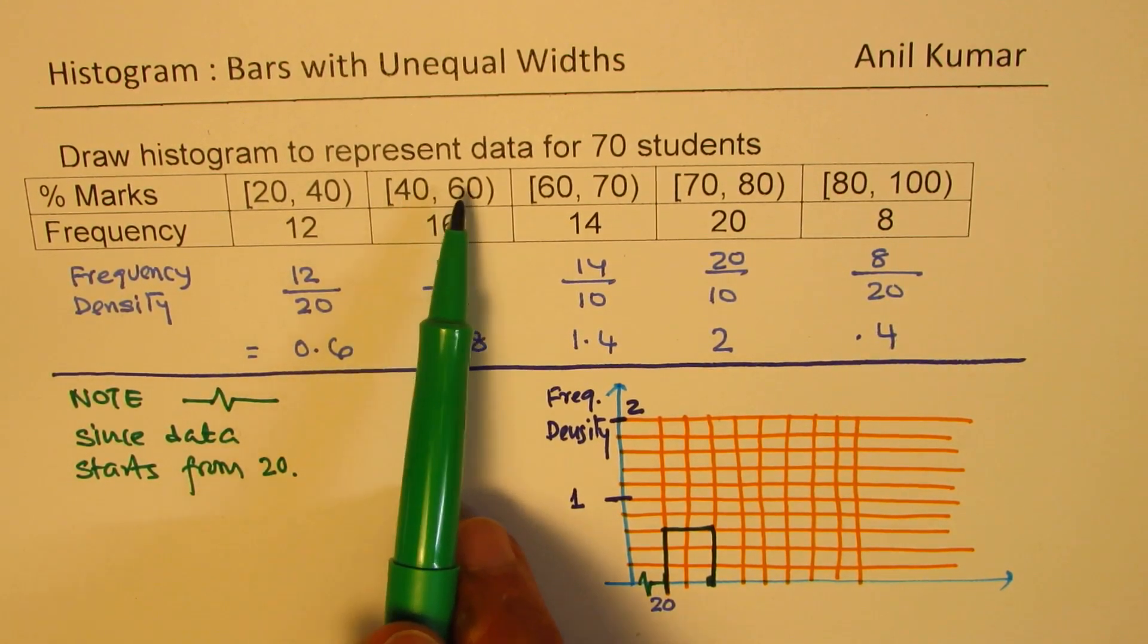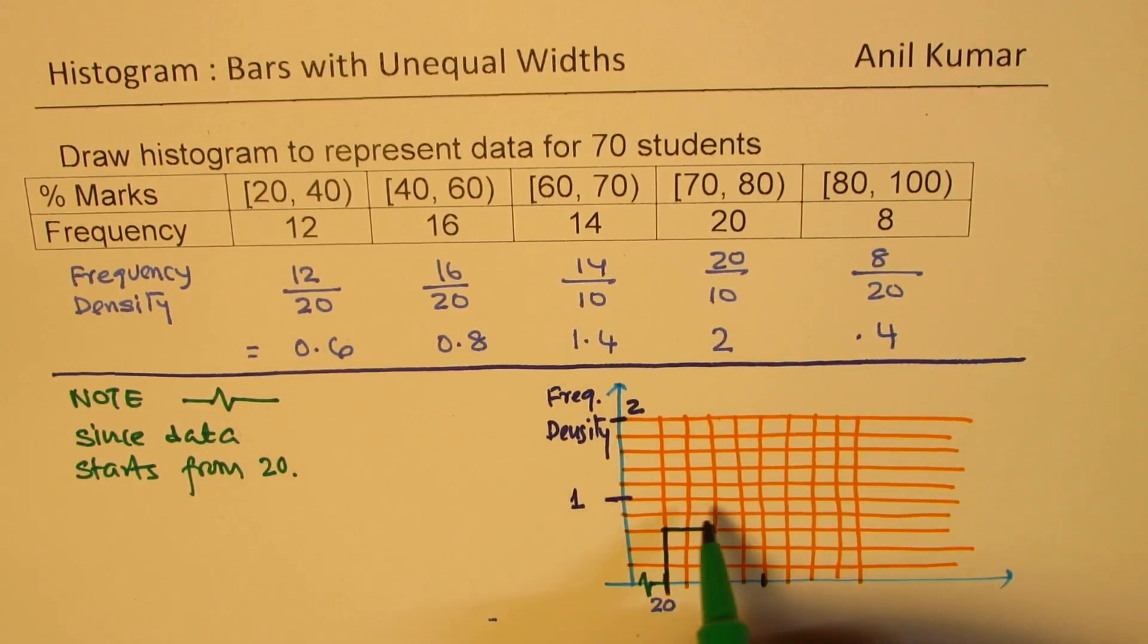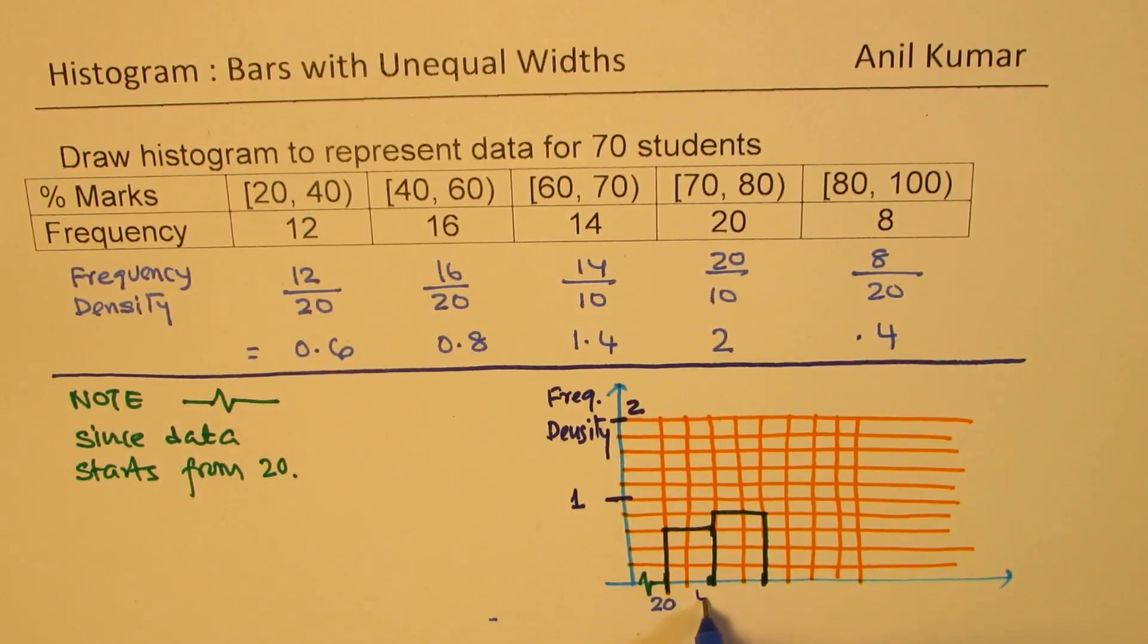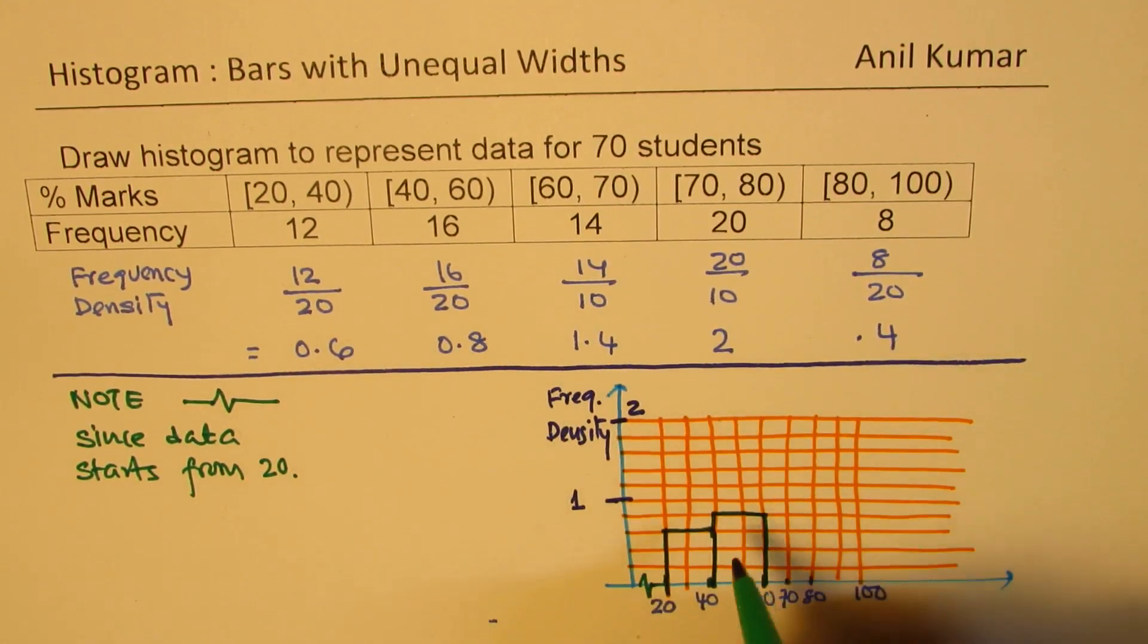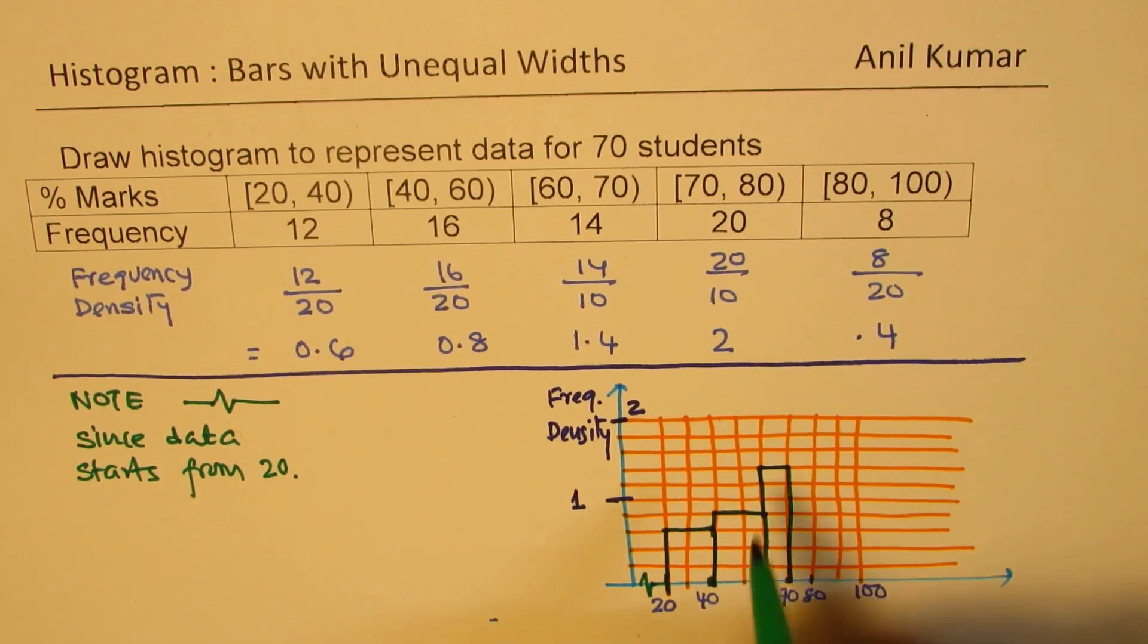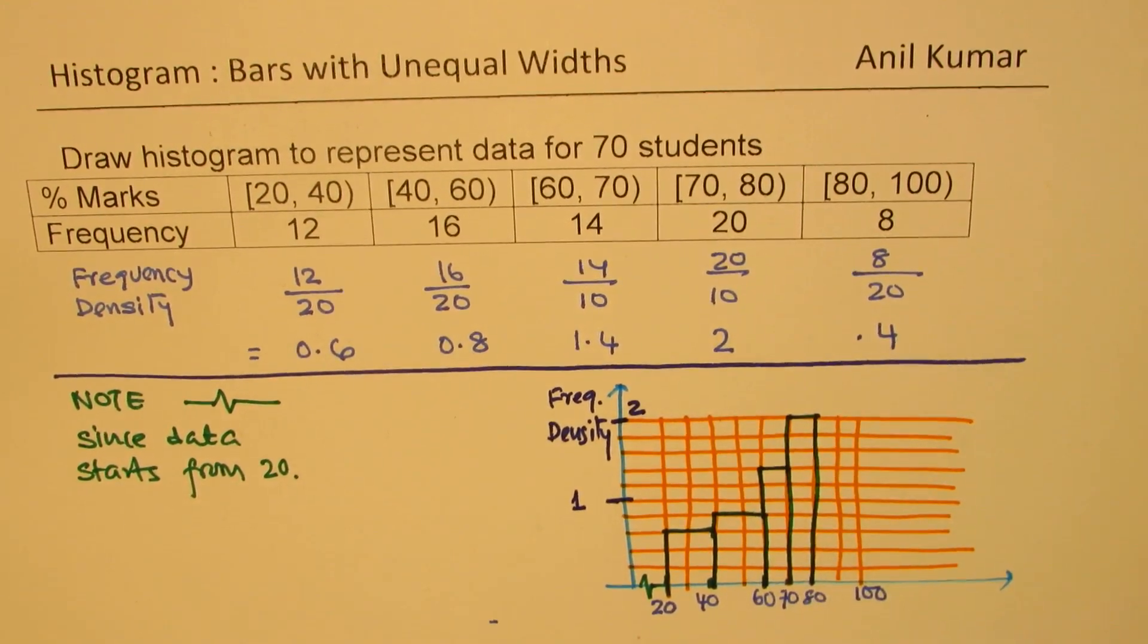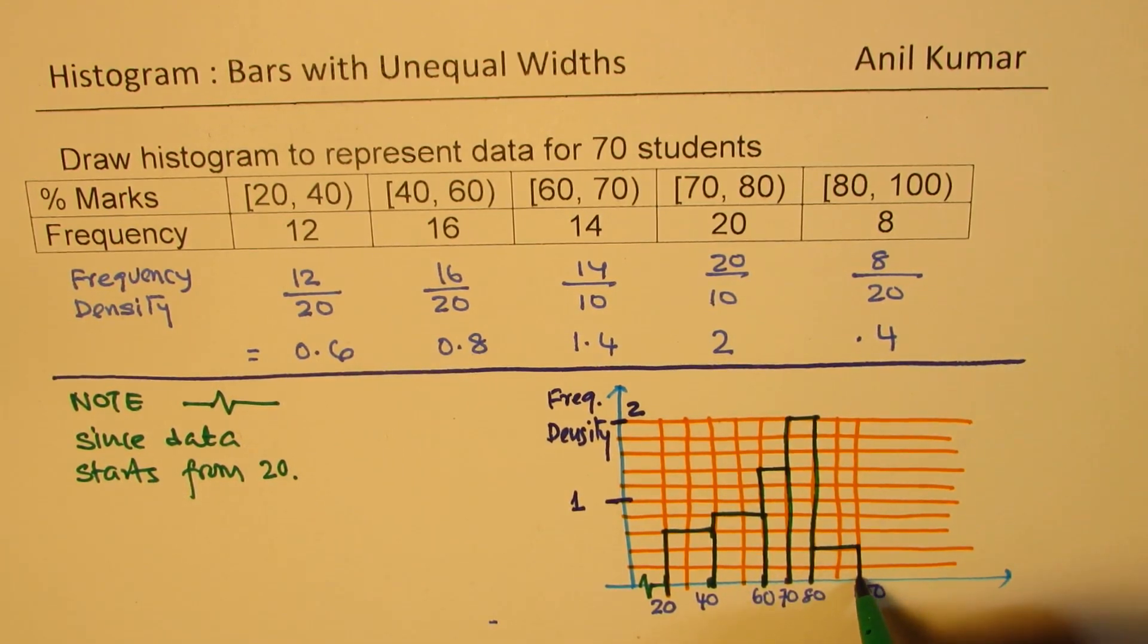Then 40 to 60 with density 0.8, we'll go up to that point. From 60 to 70, the density is 1.4. From 70 to 80, density is 2, so we'll go up to the top. Then from 80 to 100, it's 0.4. That completes the histogram.